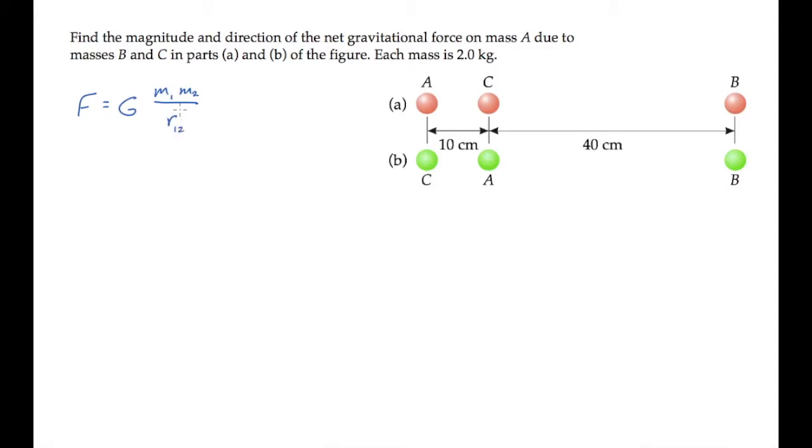The net gravitational force on mass A is due to the gravitational force from C and the gravitational force due to the more distant B. The force is attractive so they each act to the right in what I'll call the positive direction.